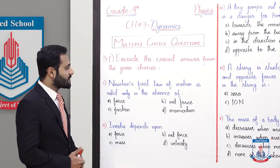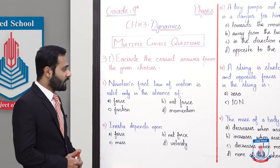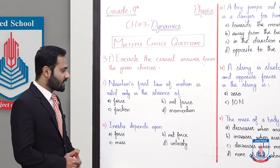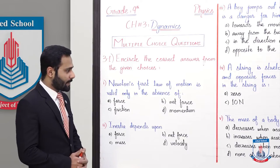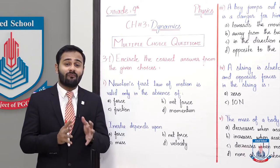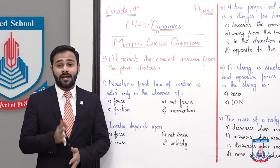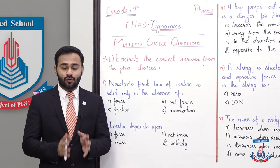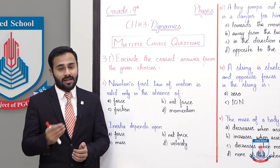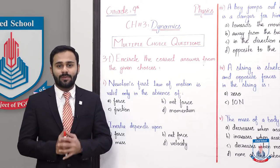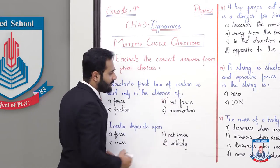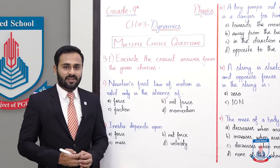The first MCQ is Newton's first law of motion is valid only in the absence of A force, B net force, C friction and D momentum. So Newton's first law of motion we discussed in our lecture that it is valid in the absence of net force. So the correct option is B which is net force.